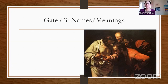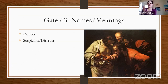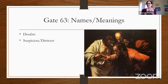Gate 63 is also part of the logical circuit and it's the beginning of the mental logical process. The names: this is the Gate of Doubt. It has a lot to do with suspicion and distrust. Remember that human design is a dualistic approach — everything can function as a binary.